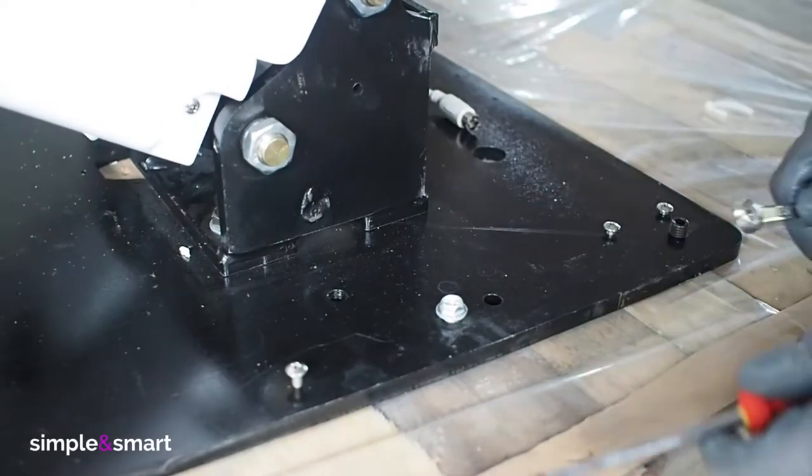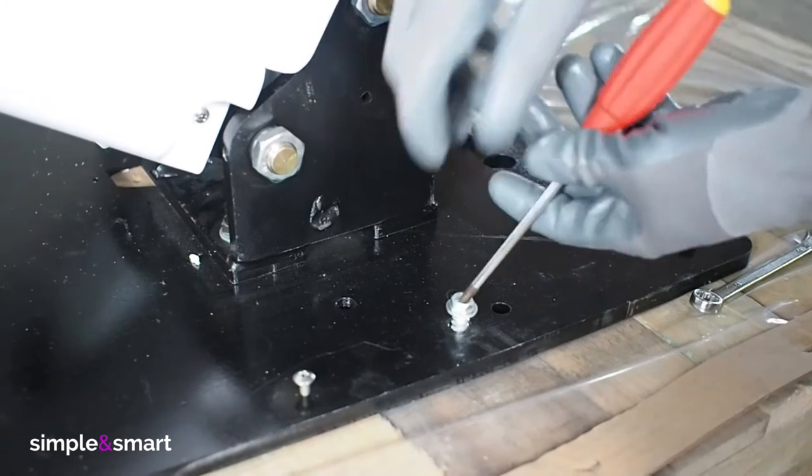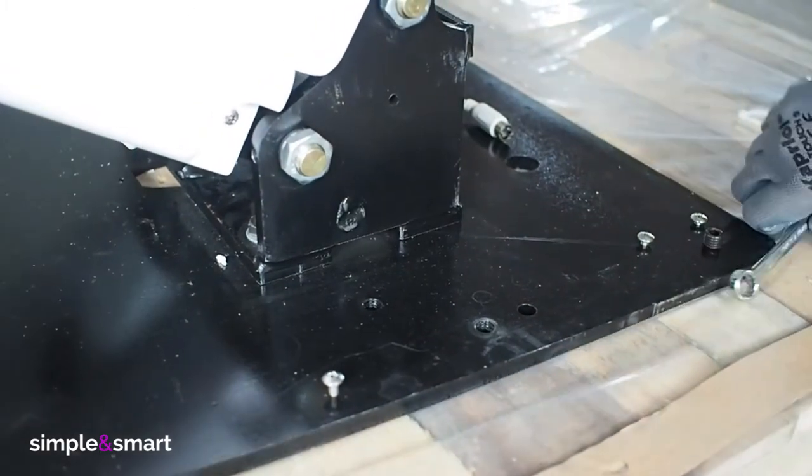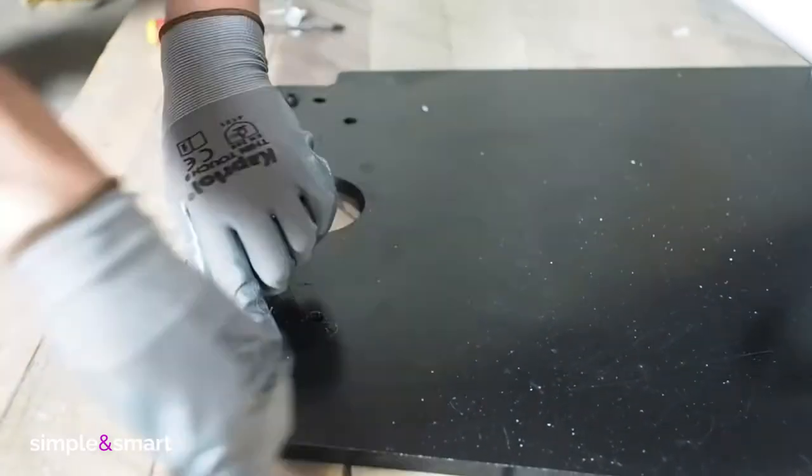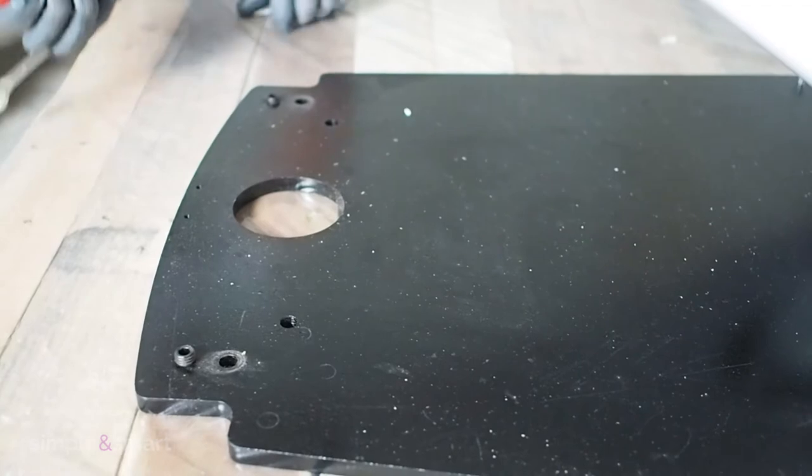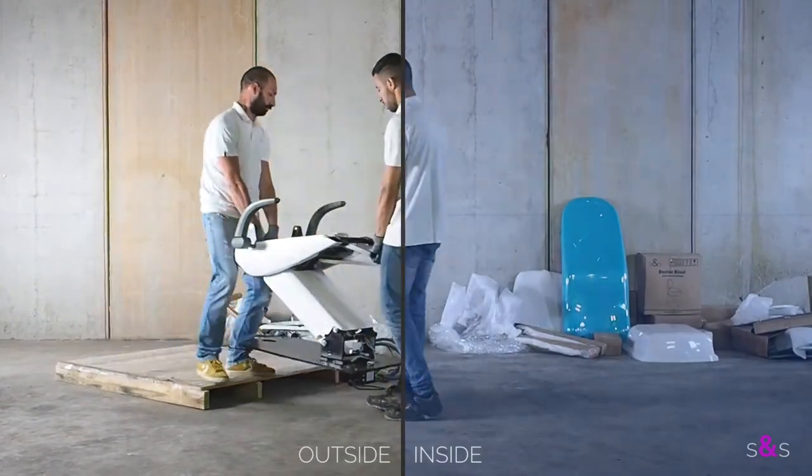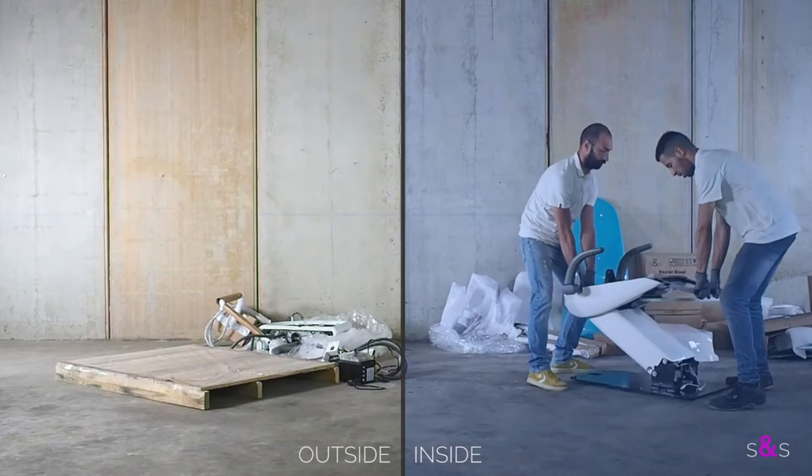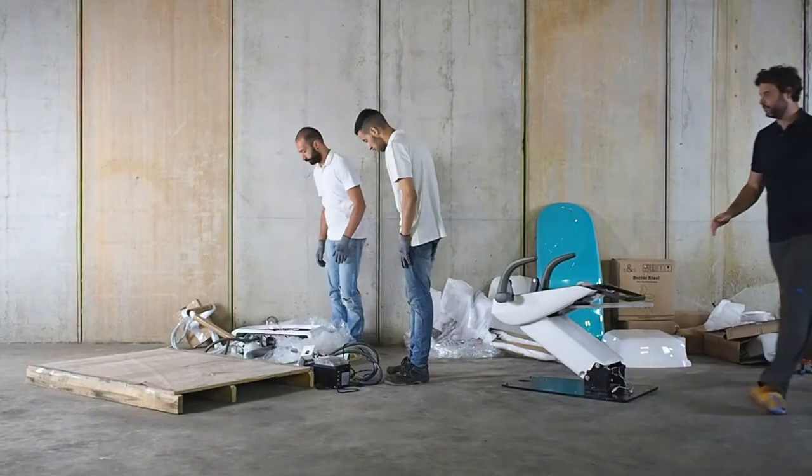Remove the screws that keep the dental chair on the wooden pallet. Take the chair inside the clinic. You can use a cart if you have it. It will simplify handling the heavy chair. Call an extra person to help you for a couple minutes.